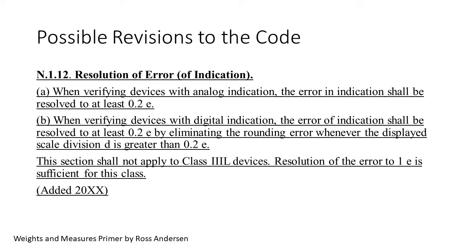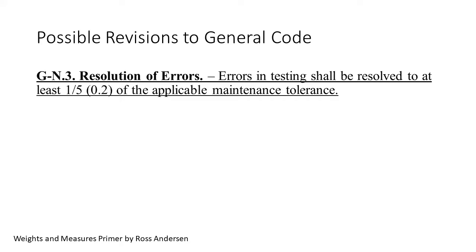This is the proposed addition to the test notes in Handbook 44 to clarify that the error has to be resolved to at least .2e parallel to R76. It addresses both analog and digital as just explained to assure equivalency. I'll explain the Class 3L in Part 3. The resolution of error is not just a scales code issue. I might suggest it ought to be addressed more generally. This proposed Section GN3 creates a 1-5th rule for the resolution of the error in the general code to go with the 1-3rd rule regarding the accuracy of the standard. It specifies that the errors in testing be resolved to at least 1-5th of the maintenance tolerance. Note the 1-5th rule is relative to maintenance tolerance while the 1-3rd rule is relative to acceptance tolerance. It could also go in the fundamental considerations.